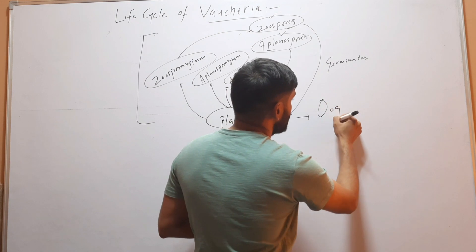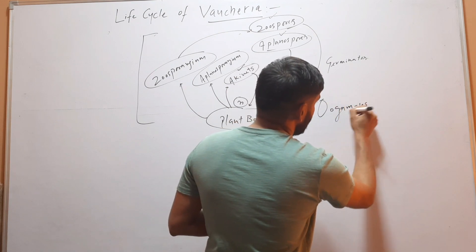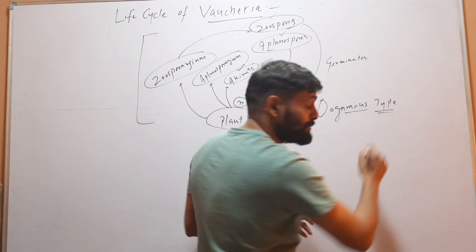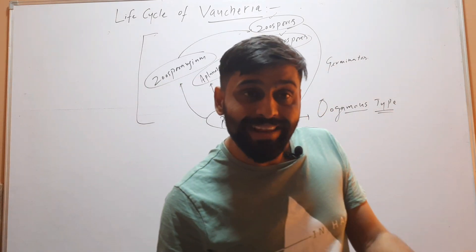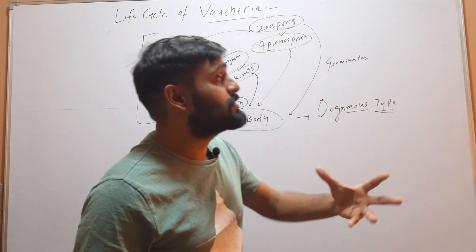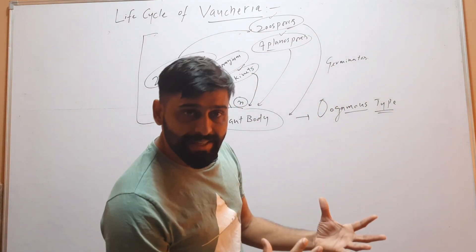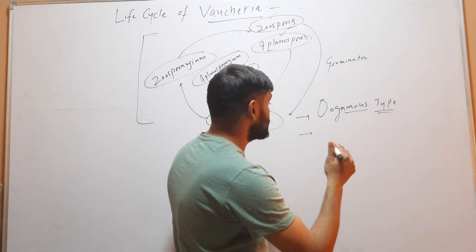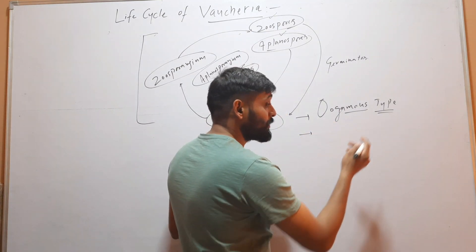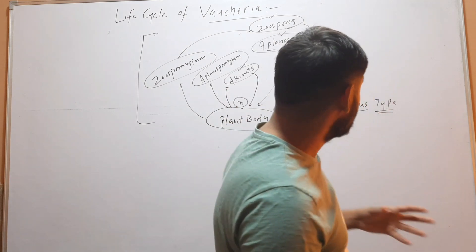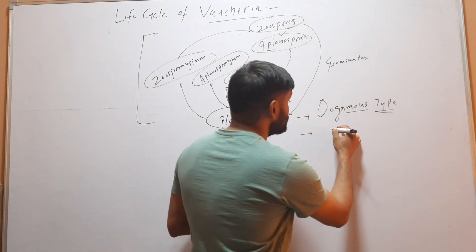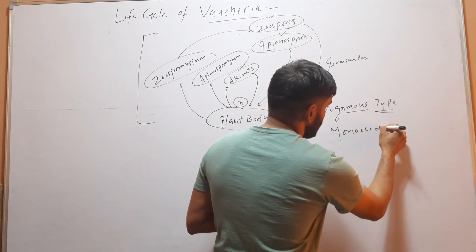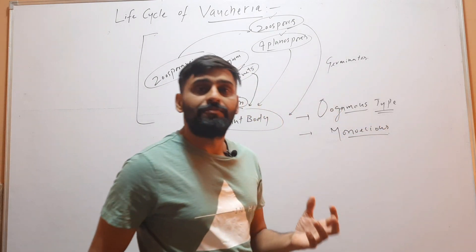Now coming to sexual reproduction. Sexual reproduction in the case of Vaucheria is of the oogamous type. Oogamous type means the male gametes are motile and smaller in size, while the female gametes are larger in size and non-motile.